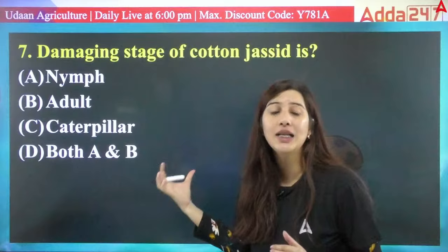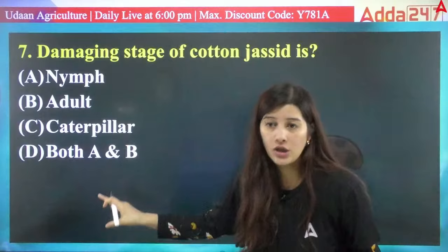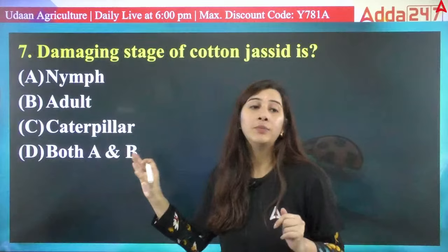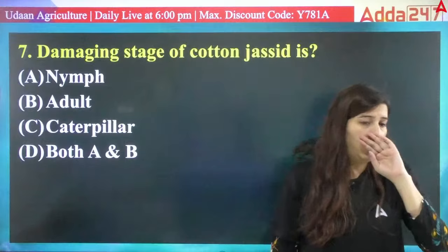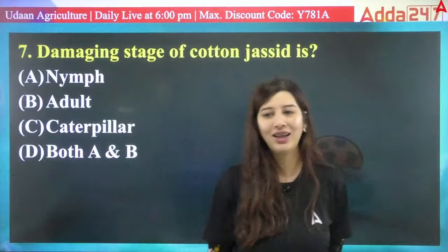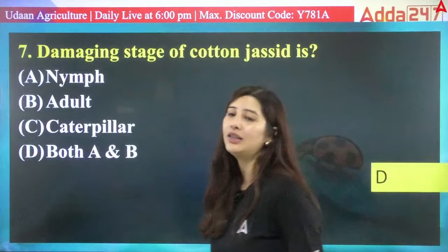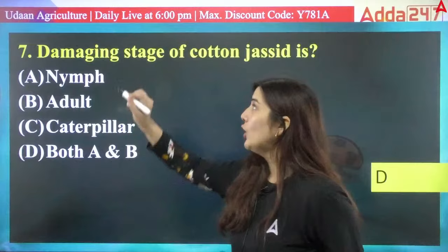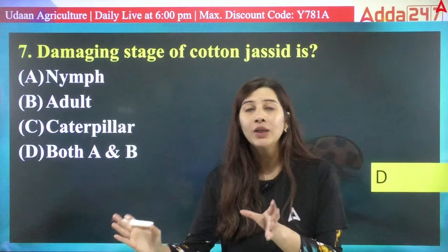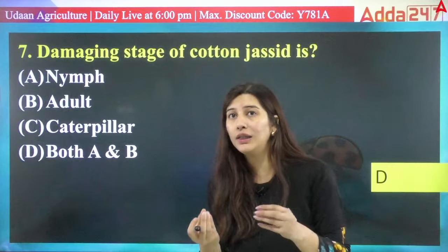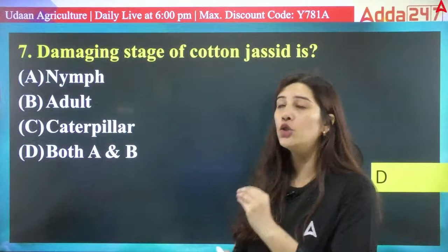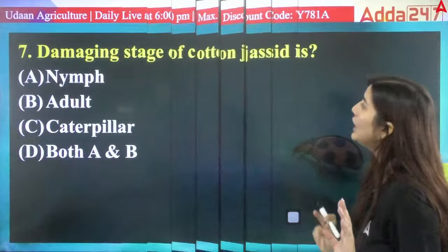What is the damaging stage of cotton jacid? Options: nymph, adult, caterpillar, or both nymph and adult. For cotton jacid (Amrasca bigutulla), both the nymph and adult are damaging stages. Remember: jacid relates to juice — 'amras' (mango juice) bigutulla — cotton jacid's nymph and adult both cause damage. The correct answer is D — both nymph and adult.